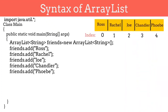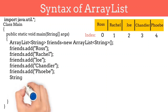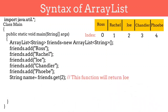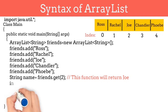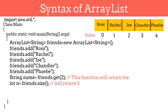Similar to an array, we can access elements in an ArrayList using an index. To access the element at index 2, we have to use the get method and pass 2 as a parameter to that method. So if we use friends.get(2), which uses the name of our ArrayList, then it will return 'Joy'. Similarly, if you want to know how many elements are stored in an ArrayList, then we have to use the size function. In our case, it will return 5 because we have 5 elements stored in our list.